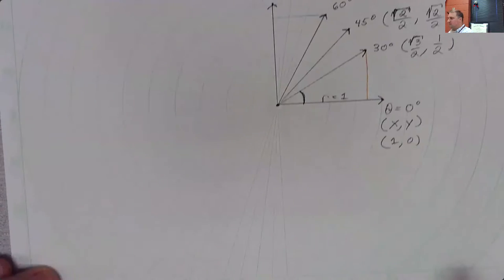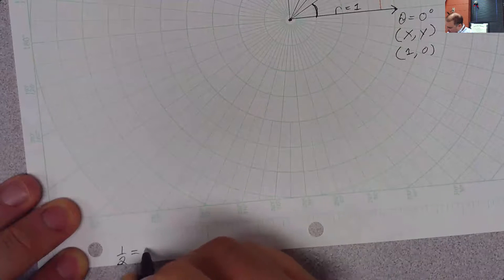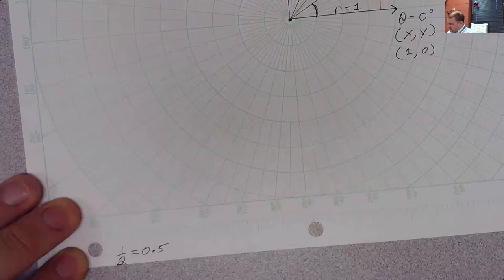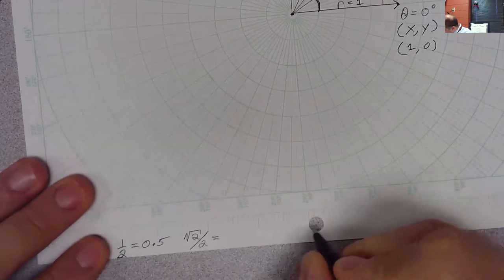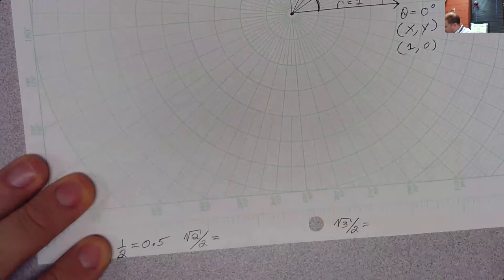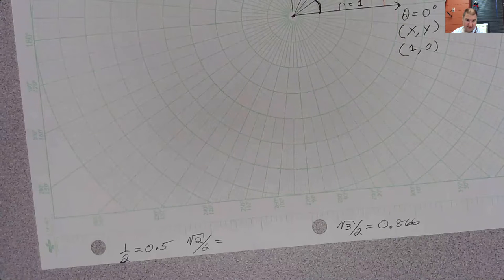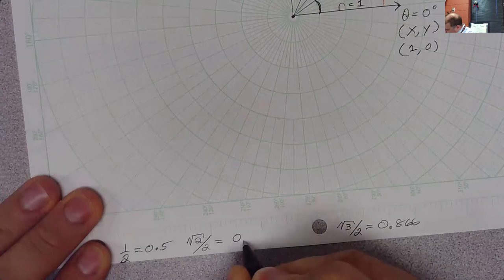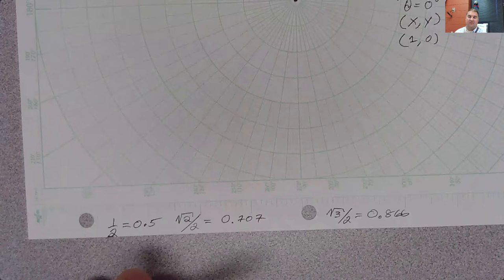Now, what we would like to do is we would like to go ahead and define these. So of course, one half is 0.5 as a decimal, the square root of two over two, and the square root of three over two, root of three over two is 0.866. And the square root of two over two is 0.707. So we want to know how to approximate those so that we know what reasonable answers would be in physics problems.